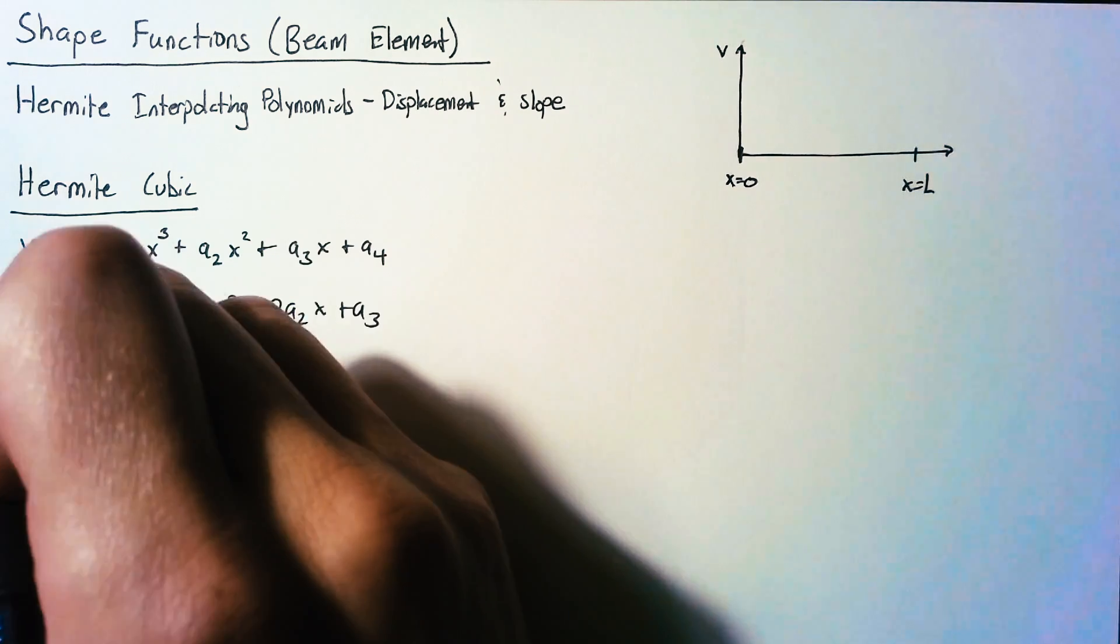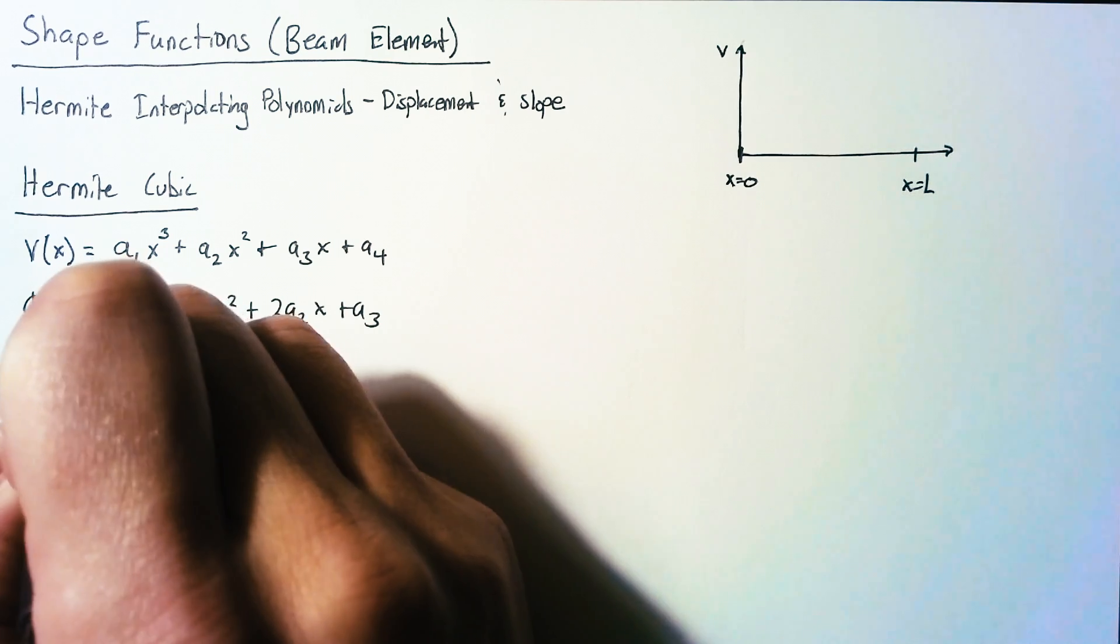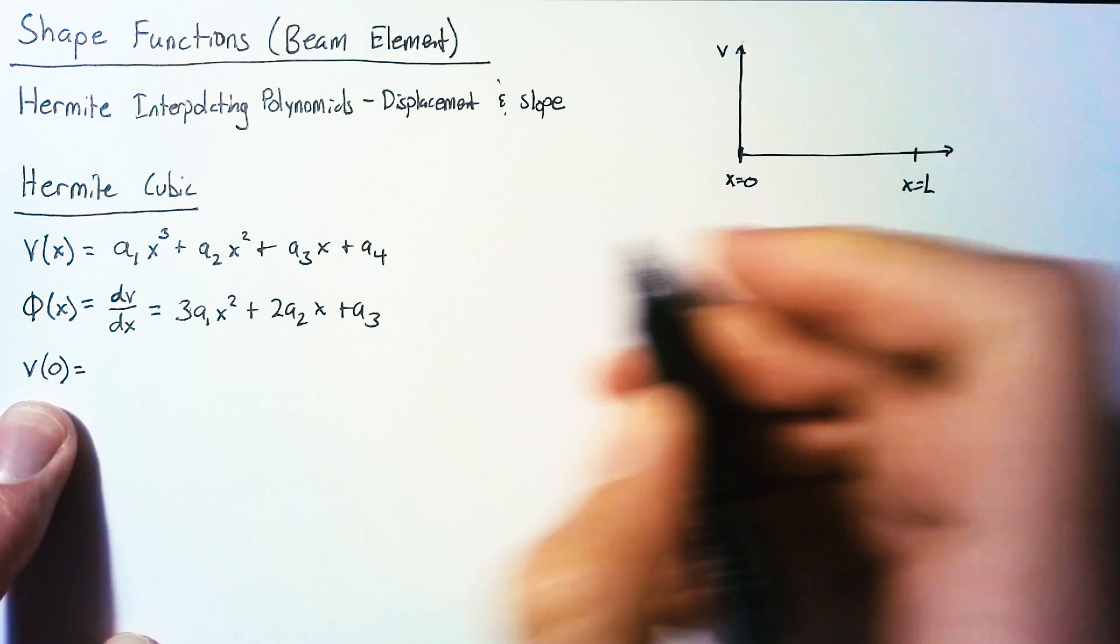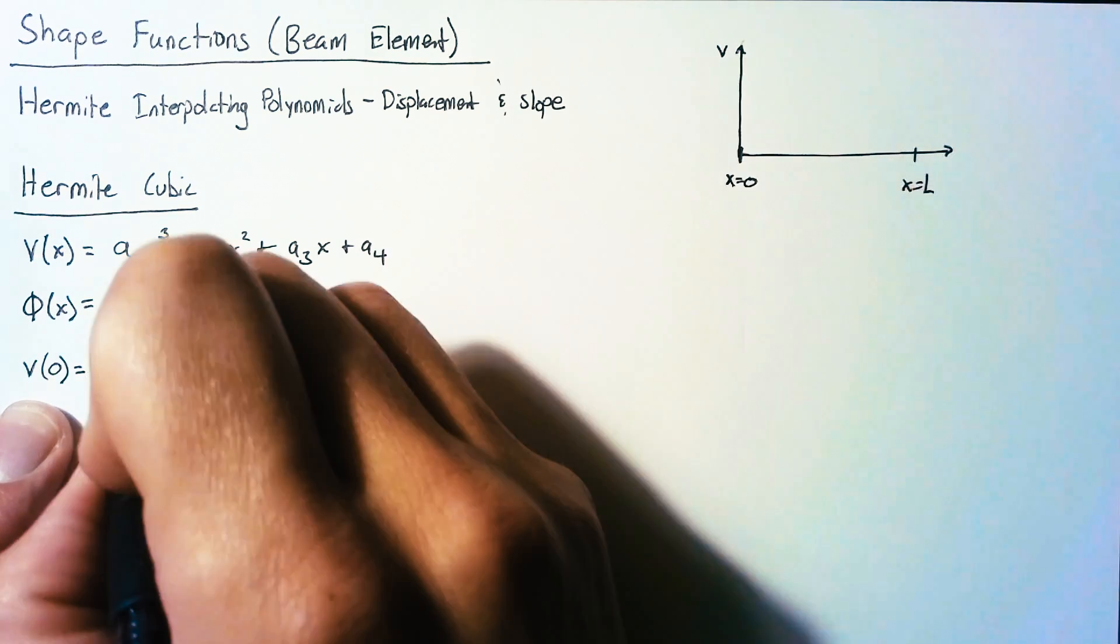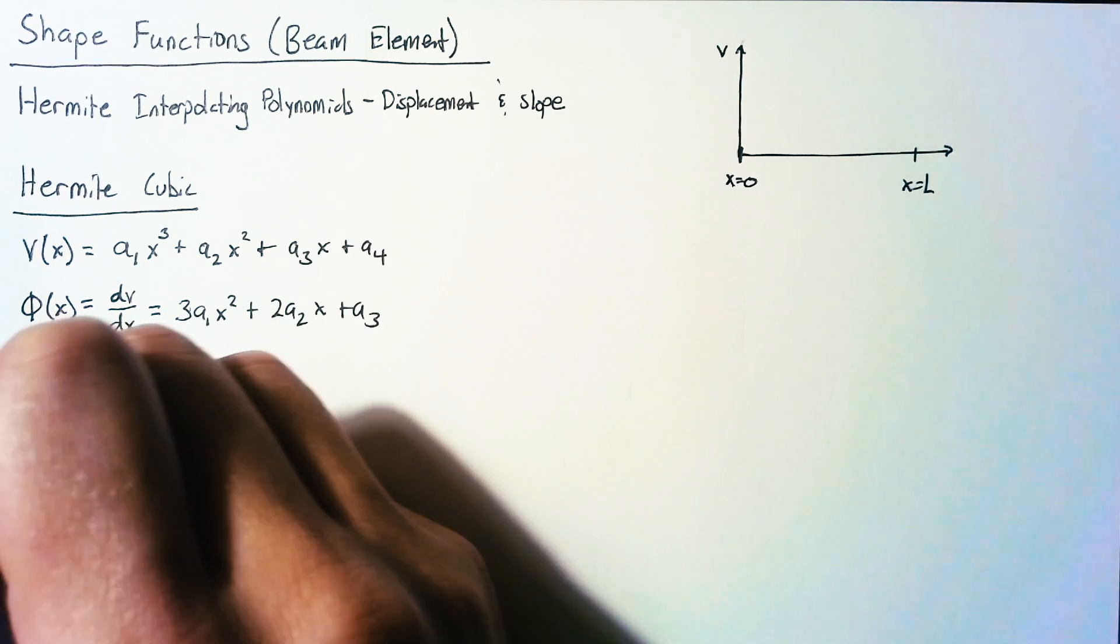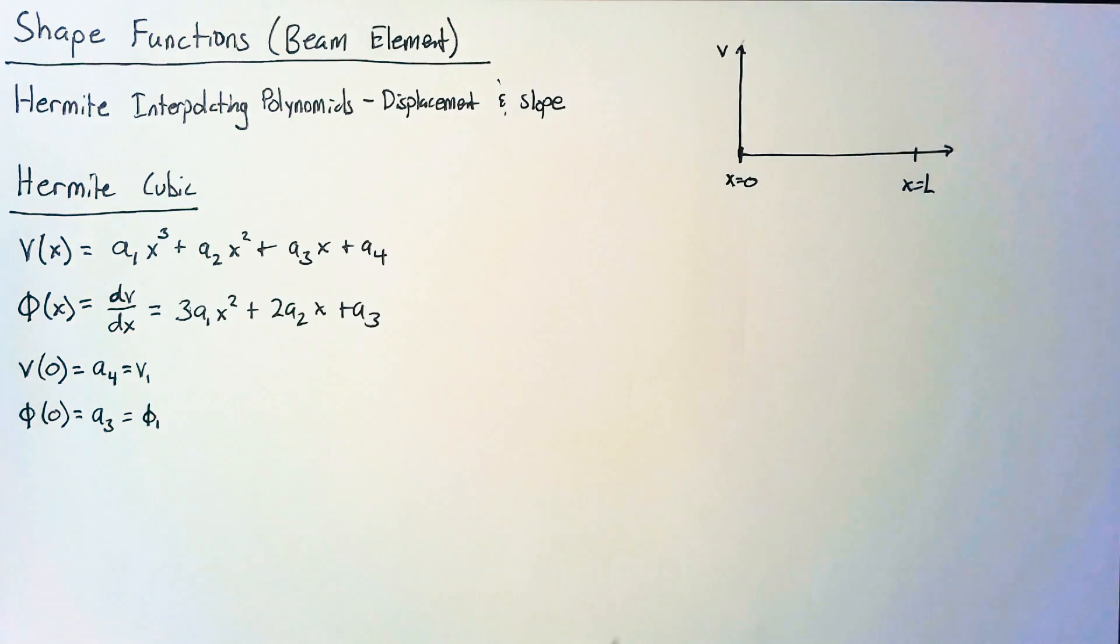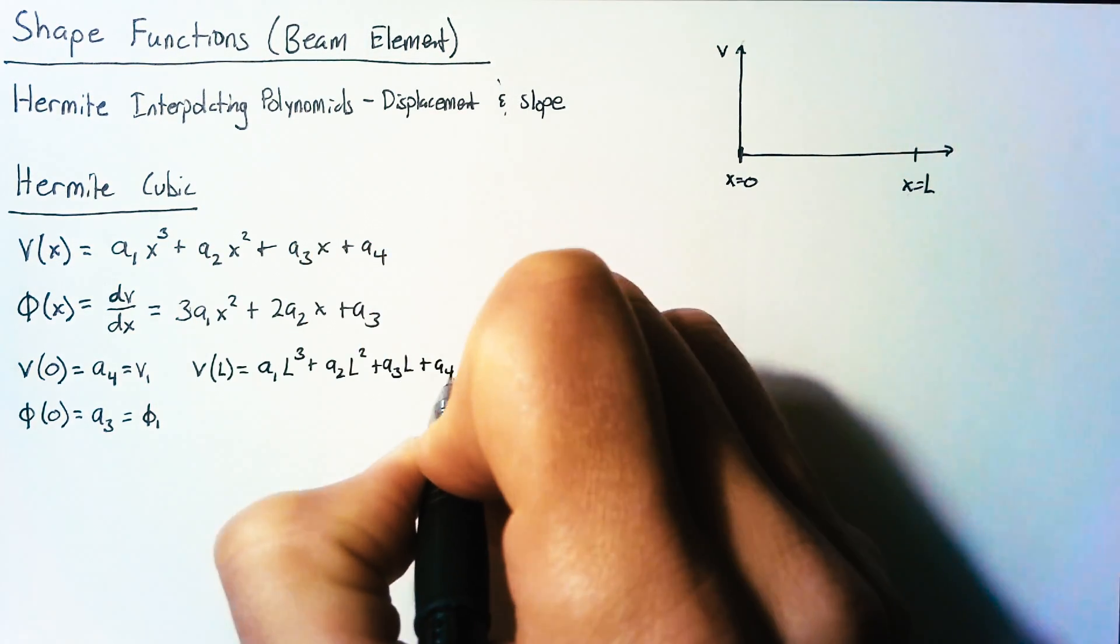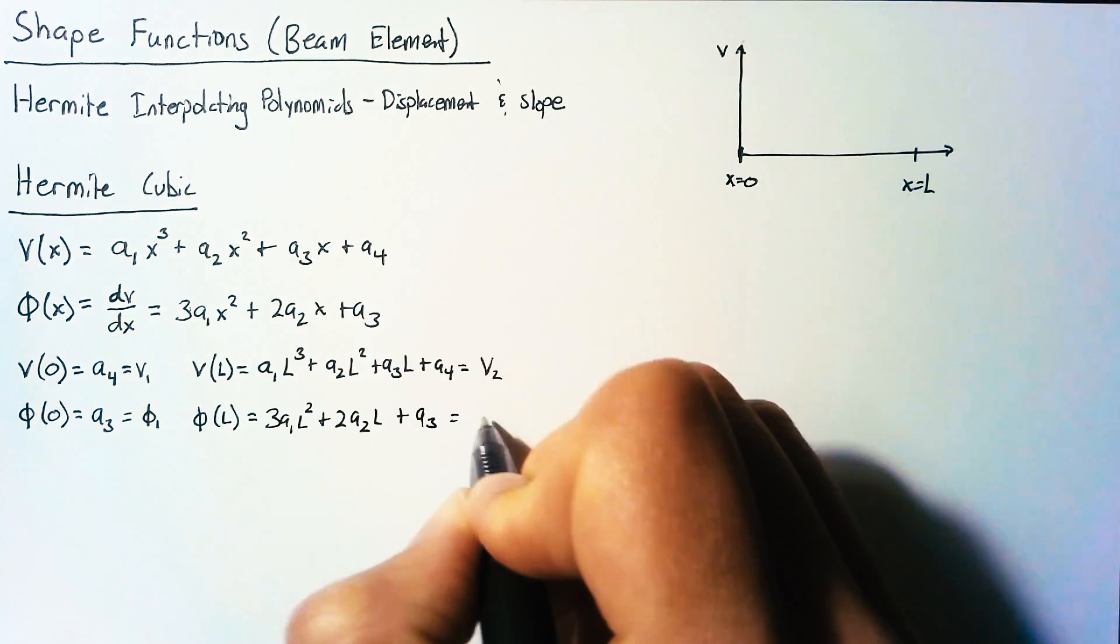Now as before, we're going to look at the displacement at our nodes and give these definitions. So at x equals zero, our value is a4, but we know that our nodal displacement here is v1. And we can do the same for slope, and we get a3, but this is just phi1. And then we do the same for the other side of the element, which is v2, and again for slope, which is phi2.